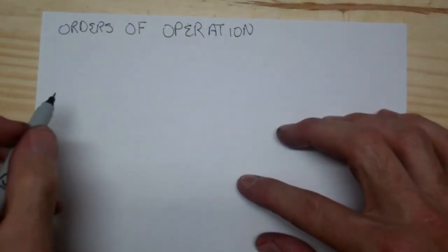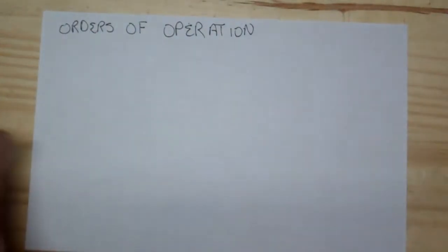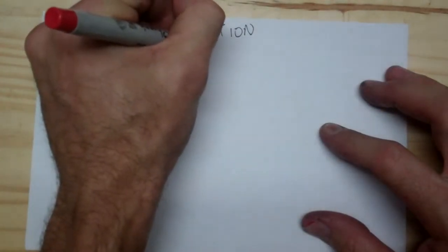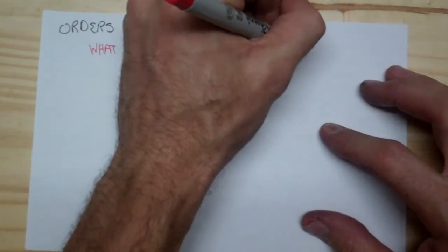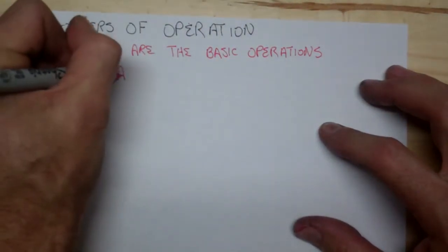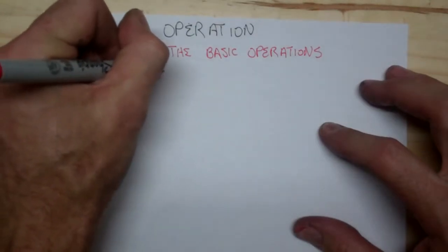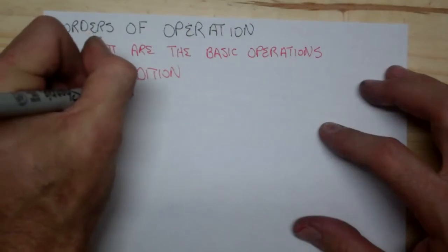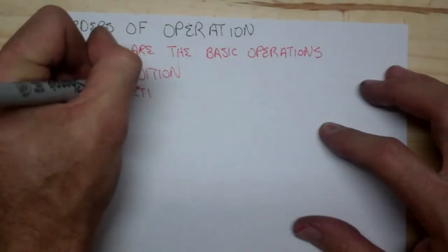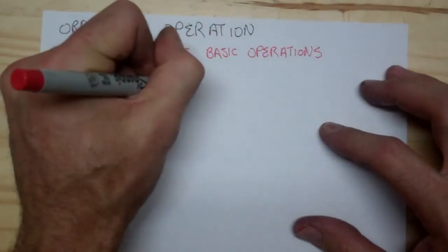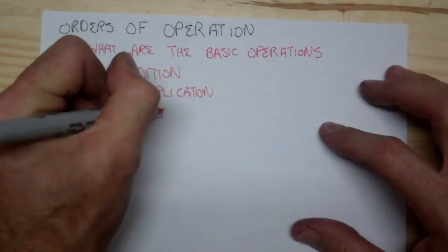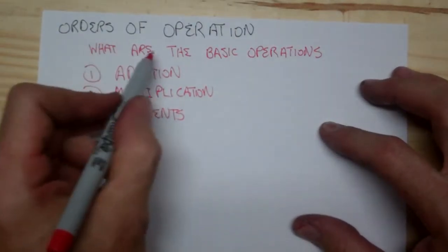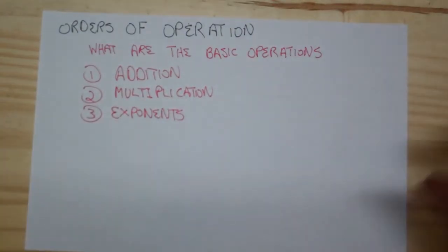The first thing I'd like to do is explain what the operations are. We're talking below pre-calc — what are the basic operations? These would be the arithmetic operations. The first one is addition, the second one is multiplication, and the third one is exponents. So those are our only three operations for arithmetic: addition, multiplication, and exponents.